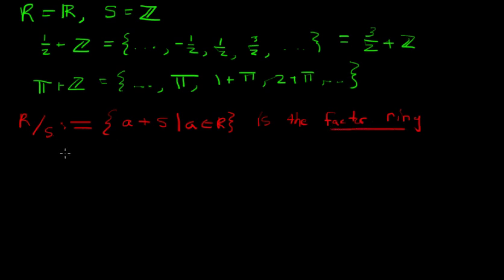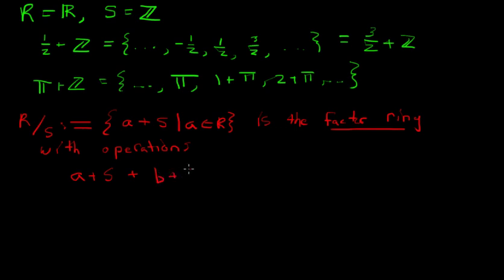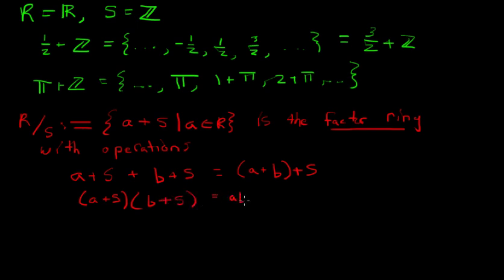We're going to define R mod S as the factor ring, and it's going to have operations. In order for it to actually be a ring, we need addition and multiplication. For any two arbitrary cosets, our coset addition is defined as: (A + S) + (B + S) = (A + B) + S. And our multiplication is defined as: (A + S)(B + S) = AB + S.